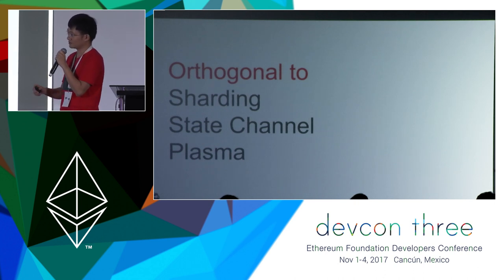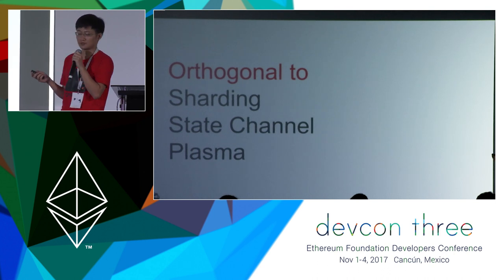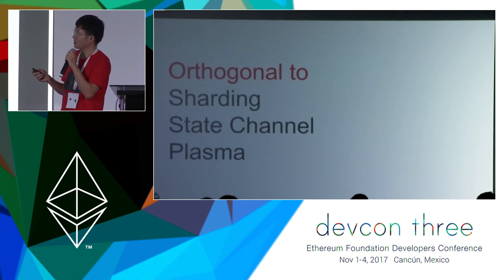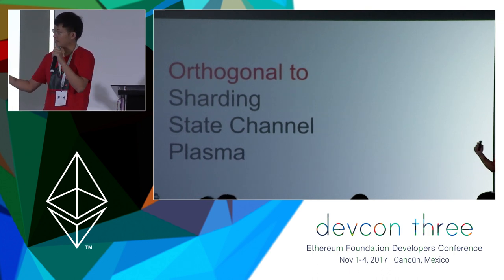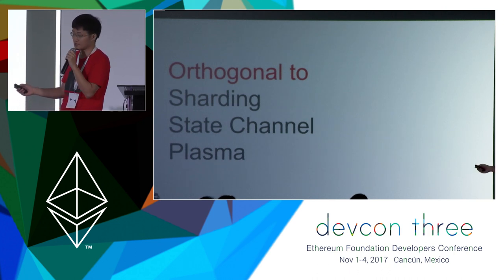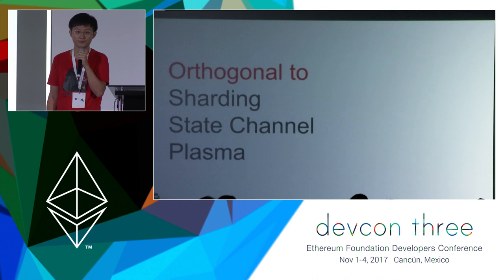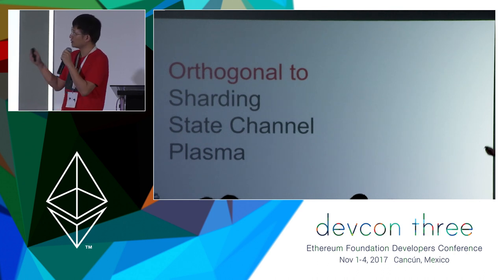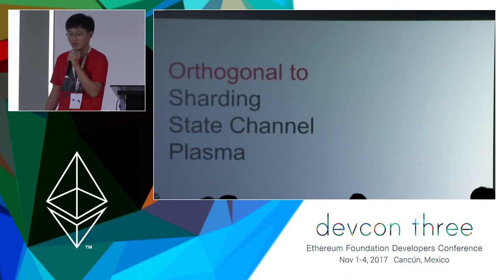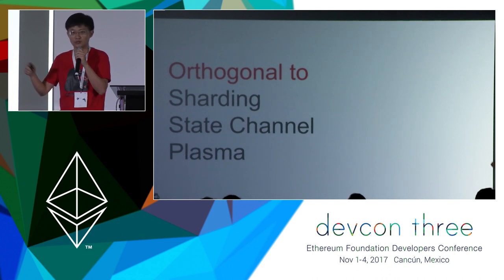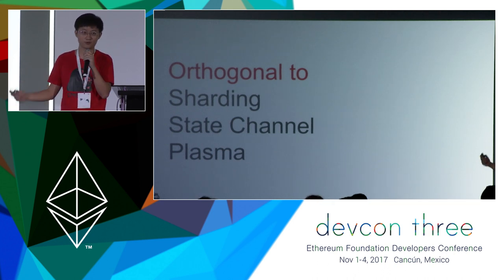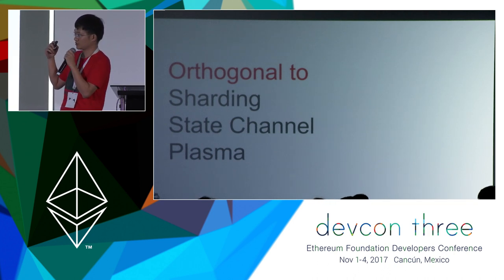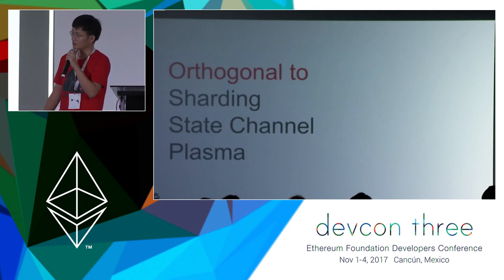The beauty of the scale-up solution is that it is orthogonal to all future scaling solutions like sharding, Plasma, and state channels — we can use them together. I believe that even in scaling solutions like Plasma, the root chain still needs very high performance and needs to do many of the things we've done in CIDA to support all those child chains.